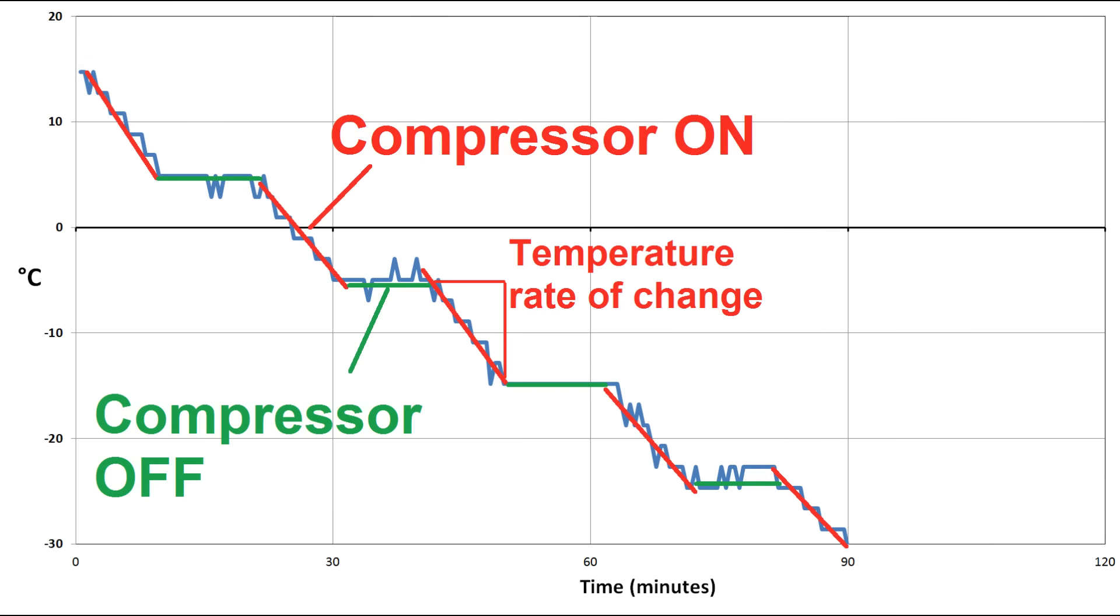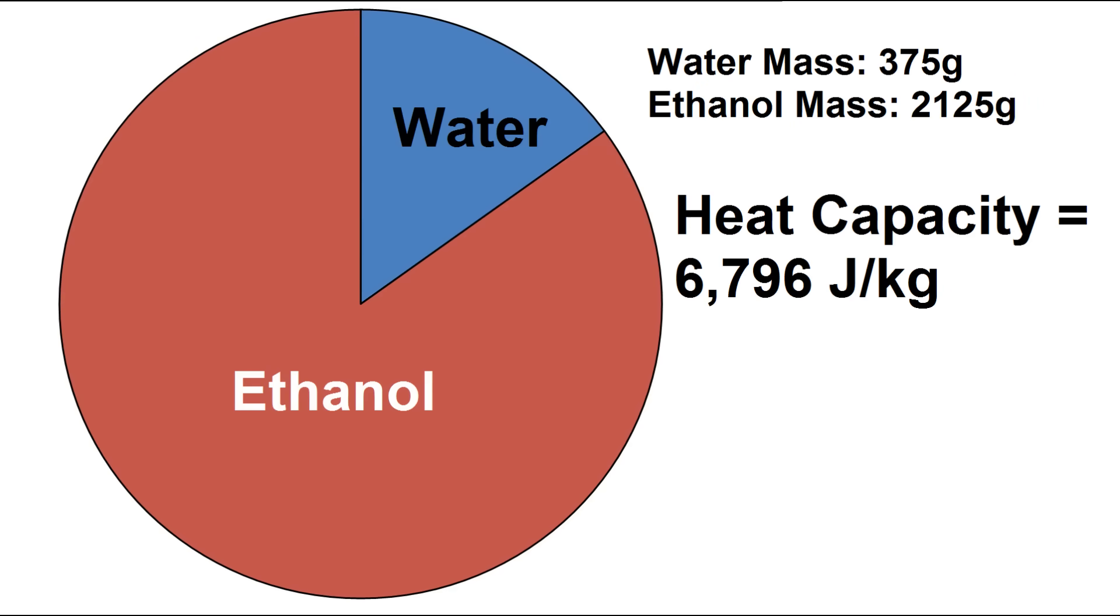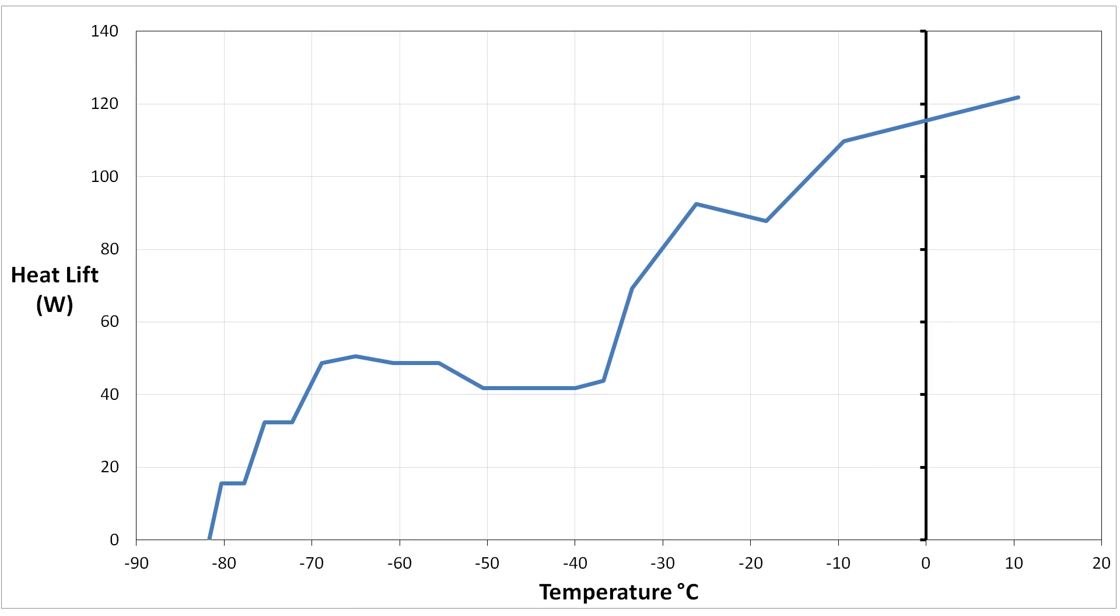By determining the rate of change of the temperature when the system is running, then multiplying that by the heat capacity of the water-alcohol mix, I can get a rough picture of the refrigeration power versus temperature. The line is a little bit messy, because I didn't have very high-resolution data, but qualitatively it makes sense, because the refrigeration power starts off high at room temperature, then approaches zero as it reaches the ultimate temperature, which is about minus 82C.